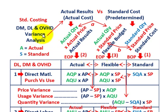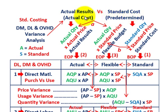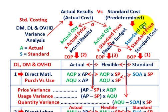Variance analysis is where we compare our actual results versus the standard cost. Our actual results are really our actual cost, and our standard cost is a predetermined cost for our labor, material, and overhead. The standard amount is the standard quantity allowed for labor, material, and overhead times some standard unit price — so standard quantity times standard price equals our standard cost.